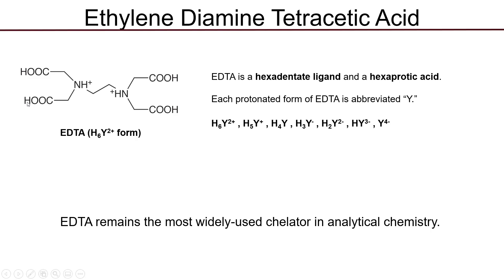If you have the fully protonated form of EDTA, this structure would be abbreviated as H6Y2+, where you have six removable protons — four from the carboxylic acid groups and two at the amines. You can use this notation to abbreviate each successive deprotonated form: if you remove one of the six ionizable protons, the molecule becomes H5Y+; if you remove two protons, it's abbreviated as H4Y, and so on.